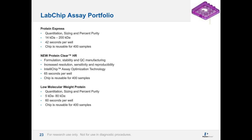In total, our assays are tailor-made for different applications to fit into each stage of your process. The Protein Express assay is used for quantitation, sizing, and percent purity from 14 to 200 kilodaltons — our highest throughput assay at 42 seconds per well. The low molecular weight protein assay is similar but optimized for proteins from 5 to 80 kilodaltons at 60 seconds per well to achieve resolution at lower molecular weights. All chip types are reusable for up to 400 samples.